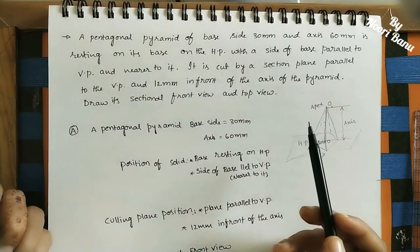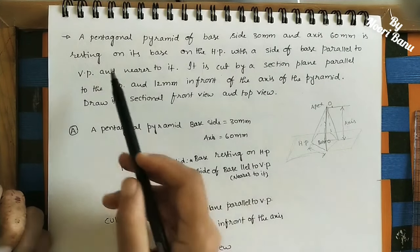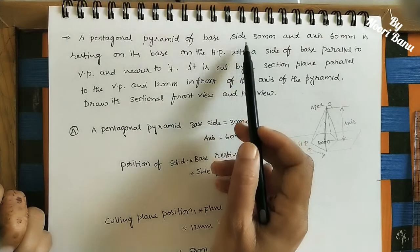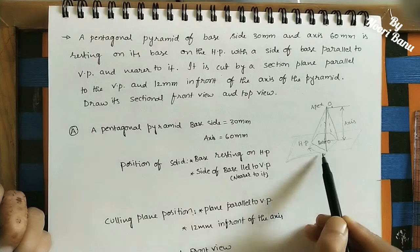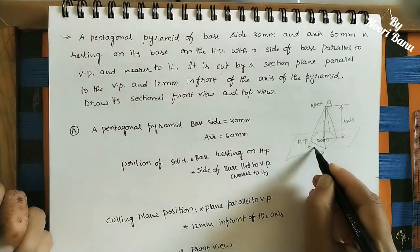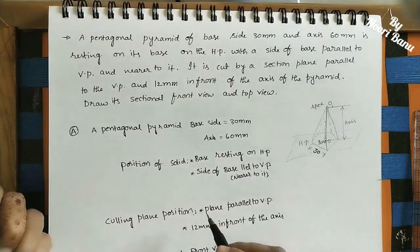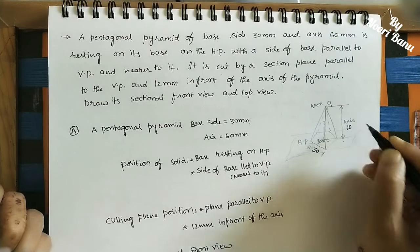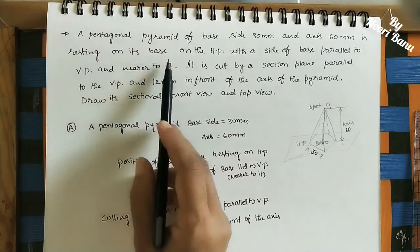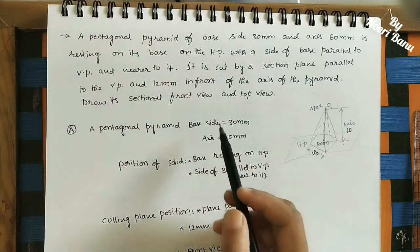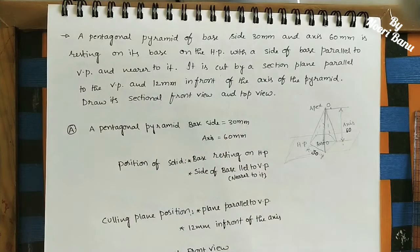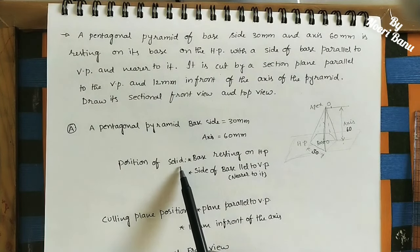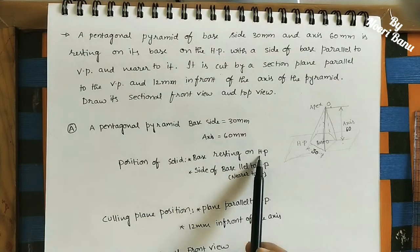Let us take the given data. We have a pentagonal pyramid with base side 30 mm and axis 60 mm, meaning height of the pyramid is 60 mm. It is resting on its base on the HP — the horizontal plane. So the base is resting on the HP.